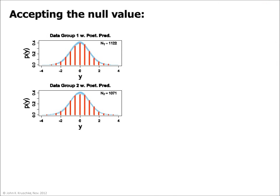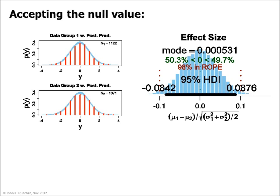By enhancing the decision rule, Bayesian methods can also accept the null value. For example, consider the large samples of data shown by the red histograms. The resulting posterior distribution is very precise. In particular, the posterior distribution on effect size shows that the 95% HDI is very narrow, falling completely between negative 0.1 and positive 0.1. An effect size of 0.1 is conventionally called small, so we might declare that effect sizes in that region are practically equivalent to zero. In general, for any given application, we can define a region of practical equivalence, or ROPE. When the 95% HDI falls completely within the ROPE, we declare the roped value to be accepted. By contrast, NHST has no way of accepting the null hypothesis.